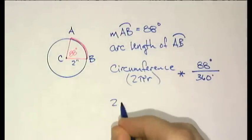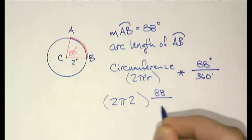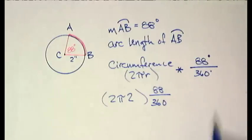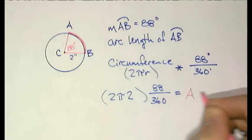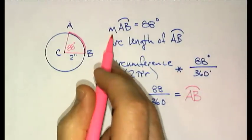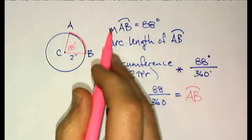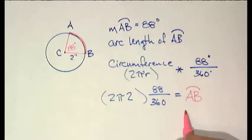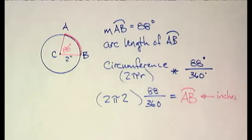So the circumference is 2π times 2 inches multiplied by 88 over 360 degrees. And this is going to be the arc length. And another symbolic way of writing arc length is you write the two end points and you put the arc over it. Notice that it's a little bit different than the arc measure. This is the arc length. This is the arc measure. This one's going to be in degrees. This one is going to be in units of length.